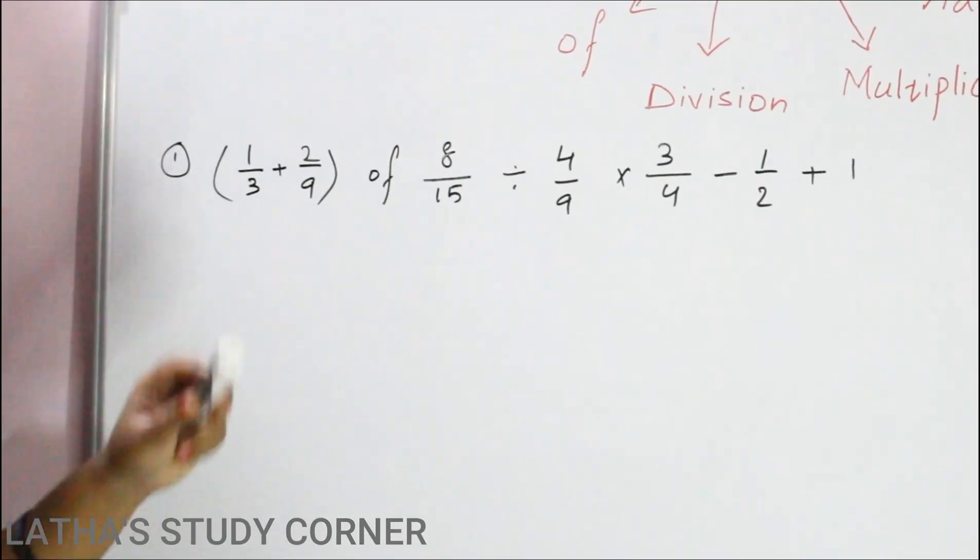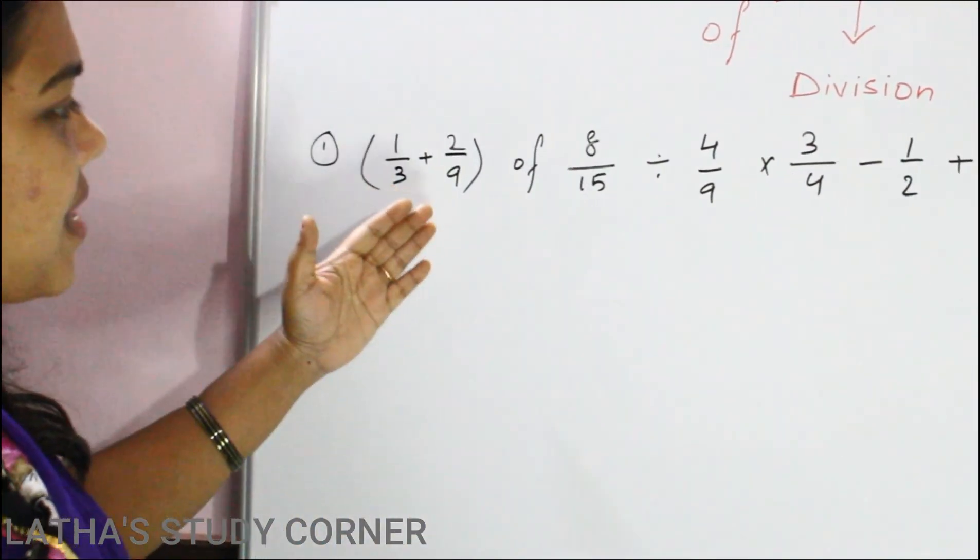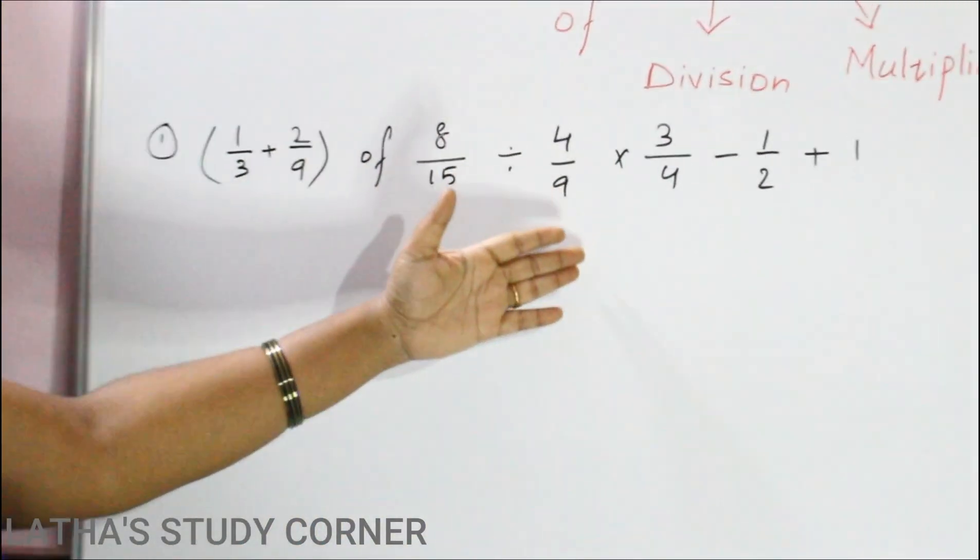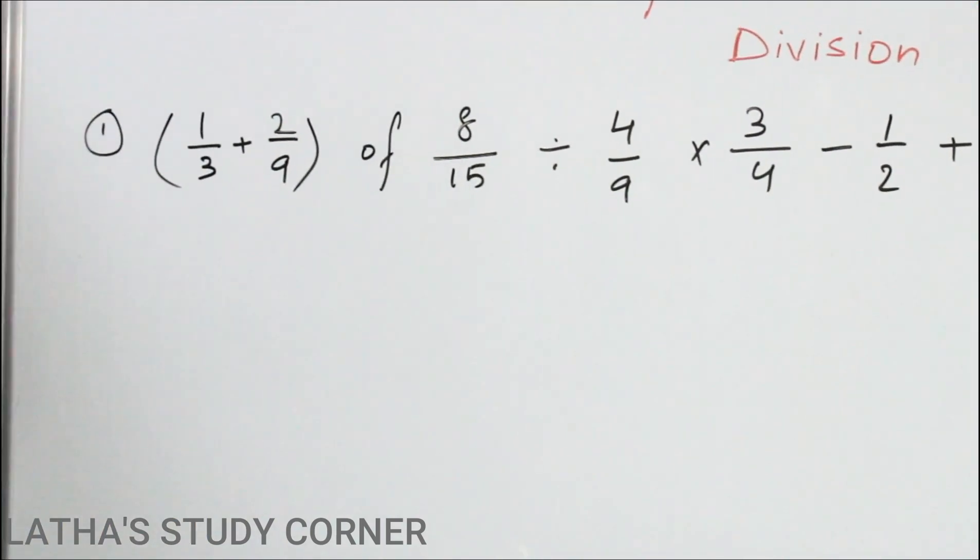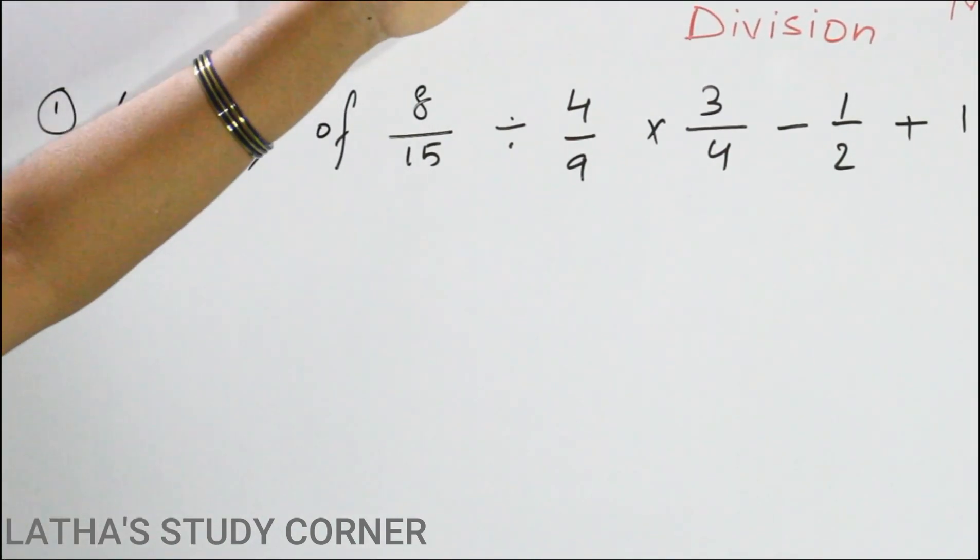So this is our question. Here in this question you can see different fundamental operations are there. There is a bracket, there is off, division, multiplication, addition and subtraction. So which operation first we have to do? For that we must follow the BODMAS.